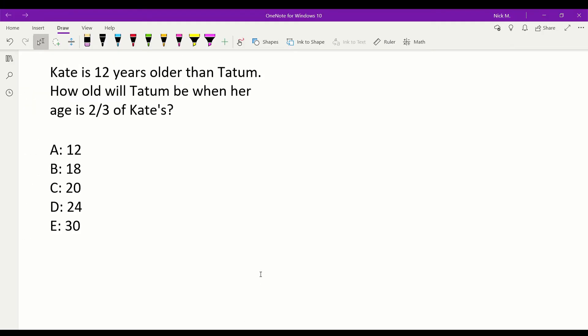Alright, to solve this problem, it's not too crazy. We need to first recognize this first statement, Kate is 12 years older than Tatum. We can rewrite that to be K equals 12 plus T with K being Kate's age and T being Tatum's age.